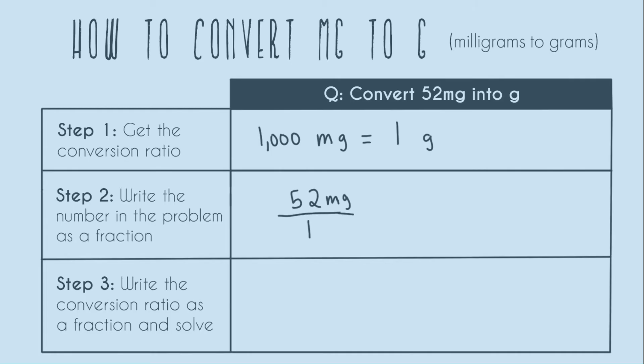And so now step three: write the conversion ratio as a fraction and solve. So I'm going to pull my work from step two down to step three. And now I'm going to write my conversion ratio as a fraction. And so what that means is I'm going to take my work from step one and I'm going to make this equal sign become the fraction bar. And so now the equal sign is the fraction bar; I have to fill in my numerator and my denominator, and I'm going to pick how I fill that in based off of canceling units.